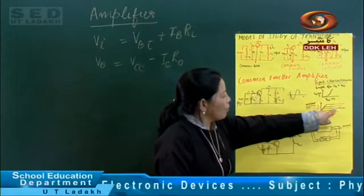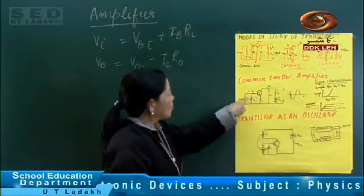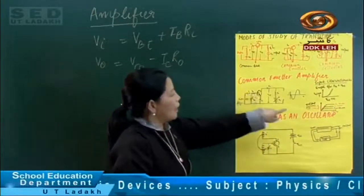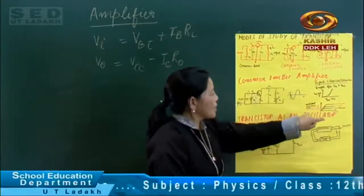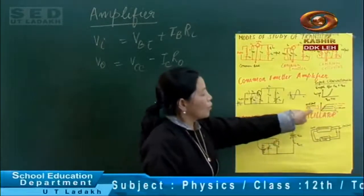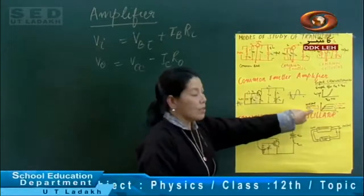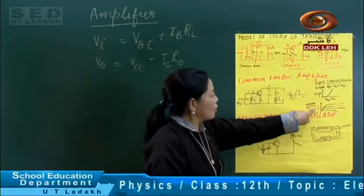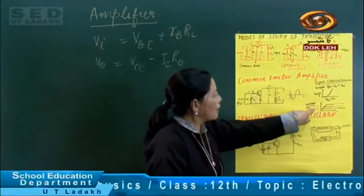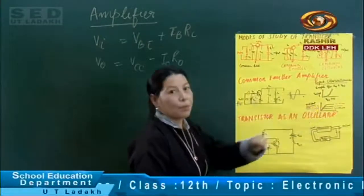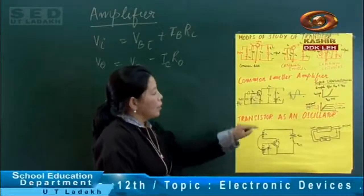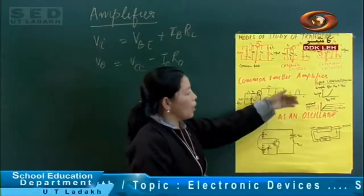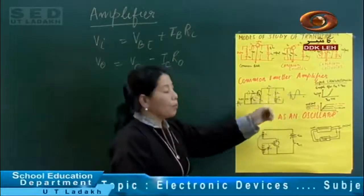The value of IB, which is the input current — if we take small changes in it, then IC, which is the output current, is the result of the input current. This is the output current.